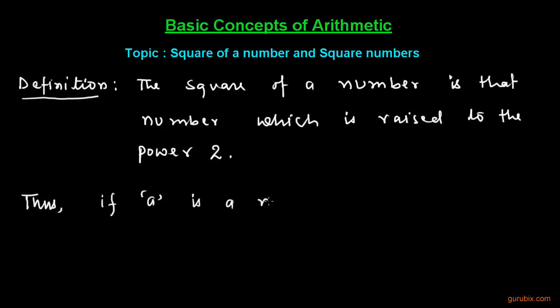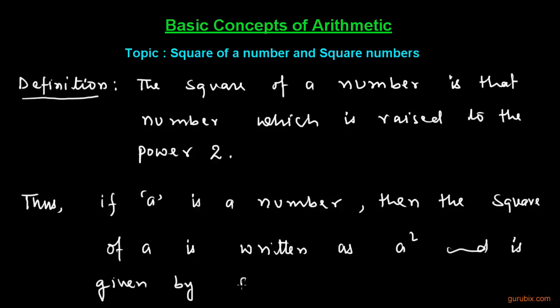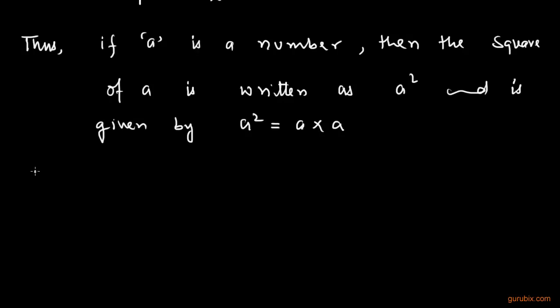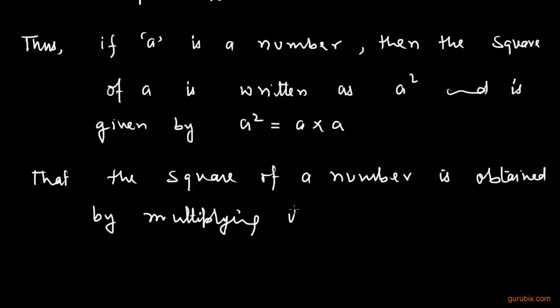if a is a number then the square of a is written as a² and is given by a² equals to a × a. We can also say that the square of a number is obtained by multiplying it by itself.